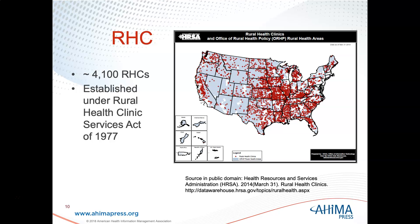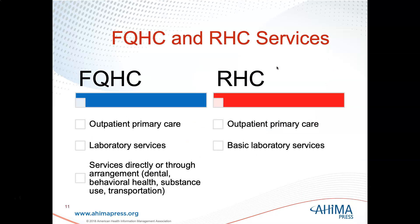There are about 4,100 rural health clinics, probably more since 2014 when this data was collected. They were established under the Rural Health Clinic Services Act in 1977. In northeast Iowa, there are quite a few rural health clinics, whereas there weren't that many FQHCs in that area.